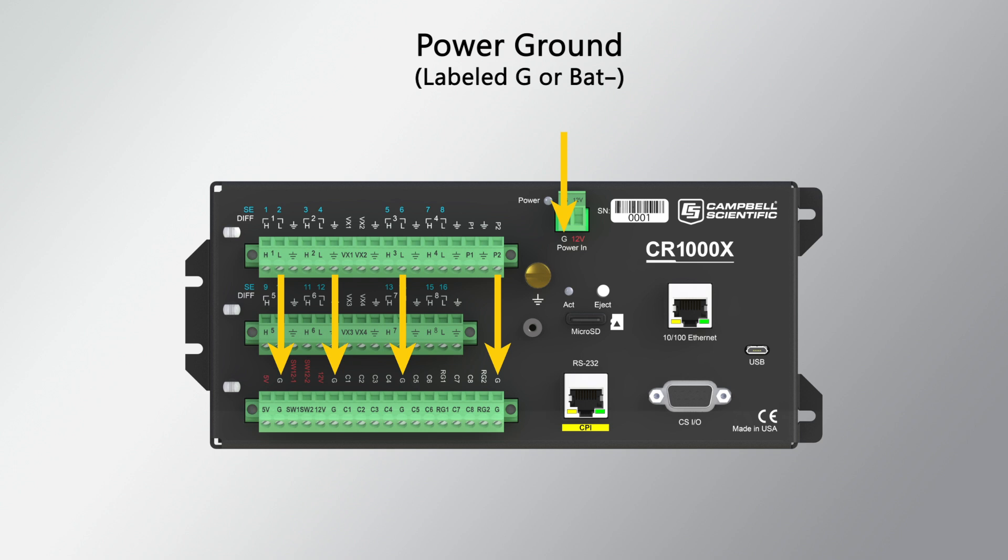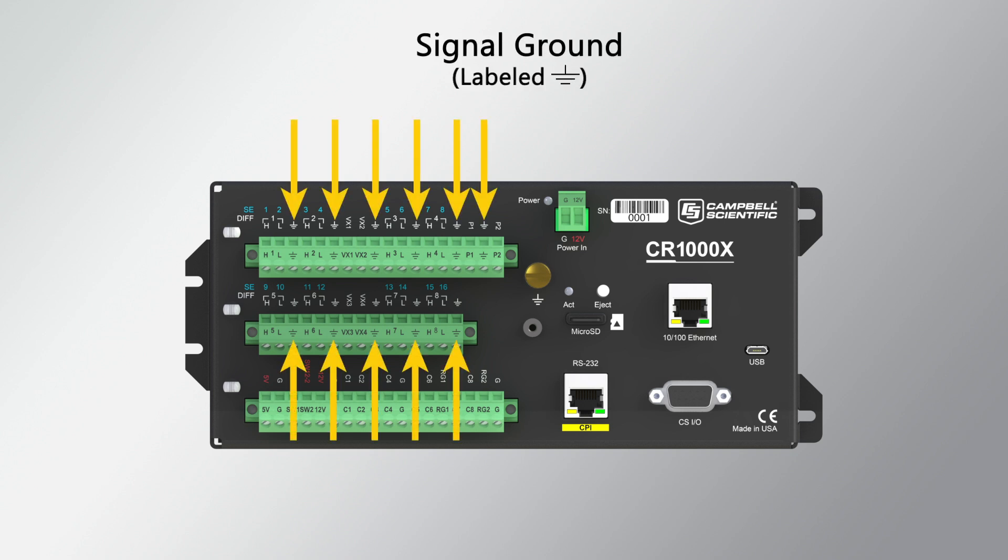Use of power ground minimizes potentially large current flow through the analog voltage measurement section of the wiring panel, which can cause single-ended voltage measurement errors.